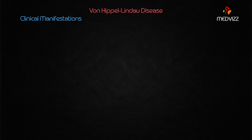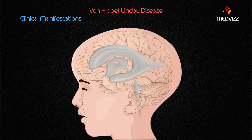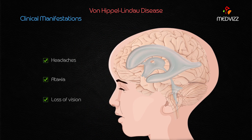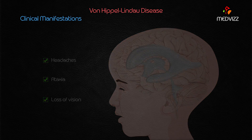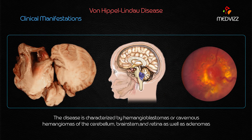In the clinical manifestations, von Hippel-Lindau initially presents with headache. Headache is the most initial clinical manifestation, along with ataxia. Headache plus ataxia or loss of vision is a very important marker in this case. This disease is specifically characterized by hemangioblastomas or cavernous hemangiomas.